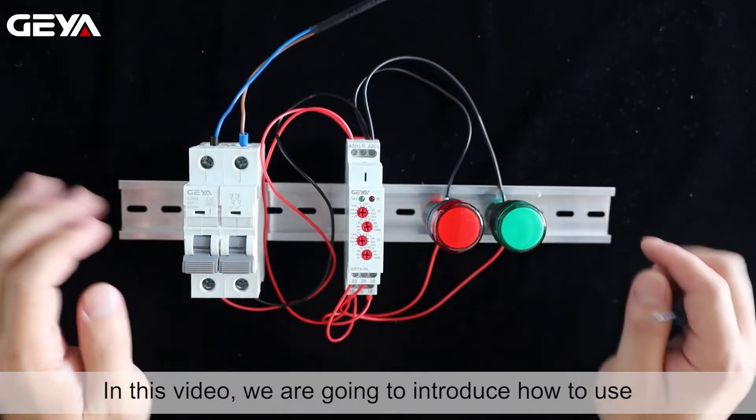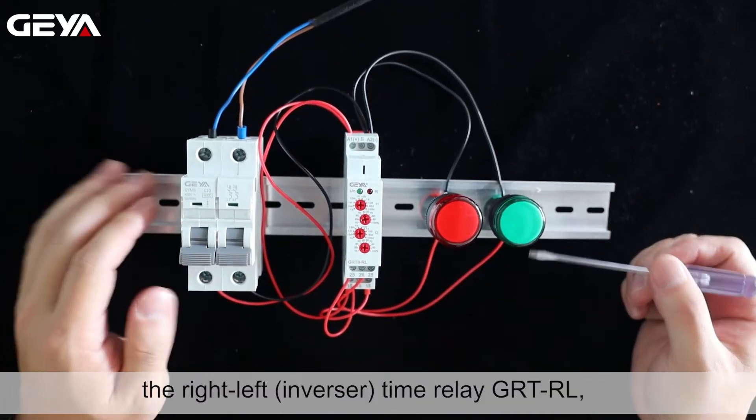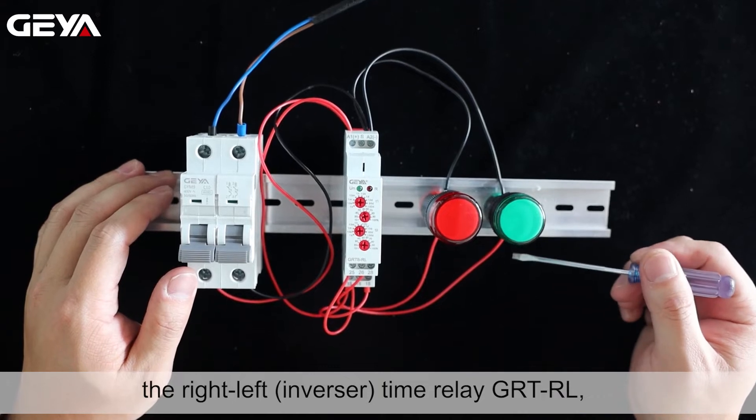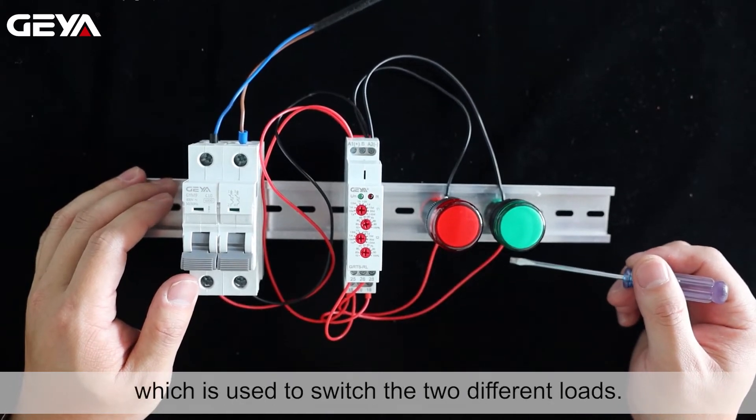In this video, we are going to introduce how to use the right-left inversor time relay GRT-RL, which is used to switch the two different loads.